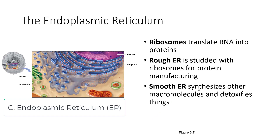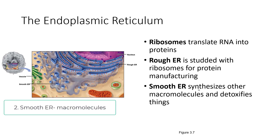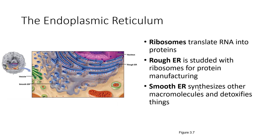The endoplasmic reticulum, or ER, comes in two types. The rough ER is studded with ribosomes, which translate RNA into proteins, and the rough ER uses these for protein manufacturing. Much of the RNA that comes out of the nucleus goes to the rough ER; some goes to the cytosol, where free ribosomes translate it into proteins used there. The smooth ER, separate from the rough ER, synthesizes other macromolecules such as starches and detoxifies things. In the liver, proteins in the smooth ER detoxify substances such as alcohol.